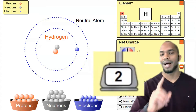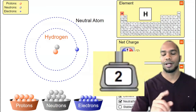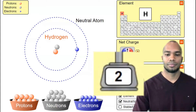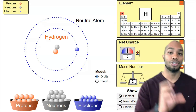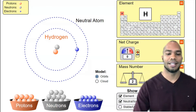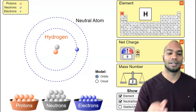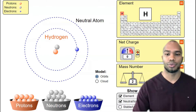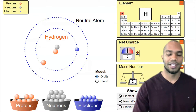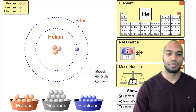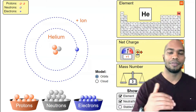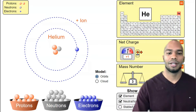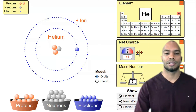Notice the mass number went up. The atom's mass is in the nucleus, and it is comprised of protons and neutrons. If I continue to add protons, notice it is now an atom of helium.